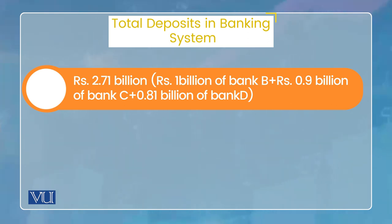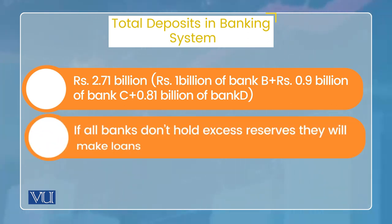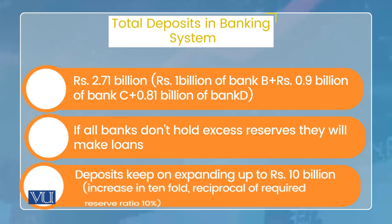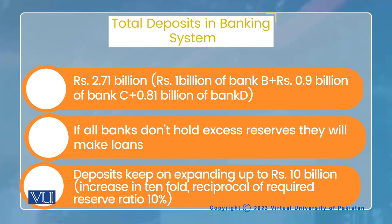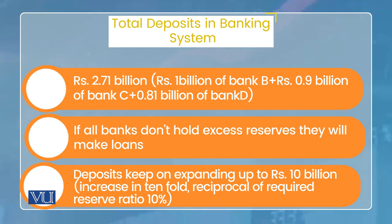This process keeps continuing. At every step, excess reserves decrease by 10%, but they are not yet exhausted, so the process continues. It will go on until total deposit creation becomes 10 times the initial 1 billion rupees reserve that was created — reaching a total of 10 billion rupees.